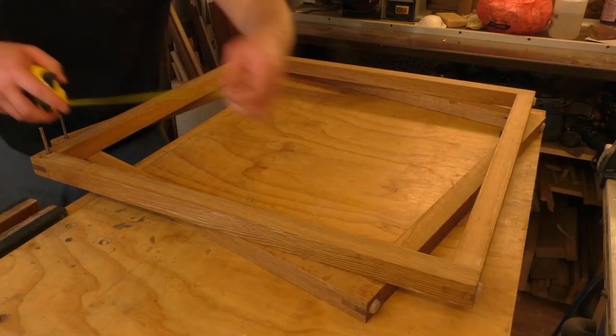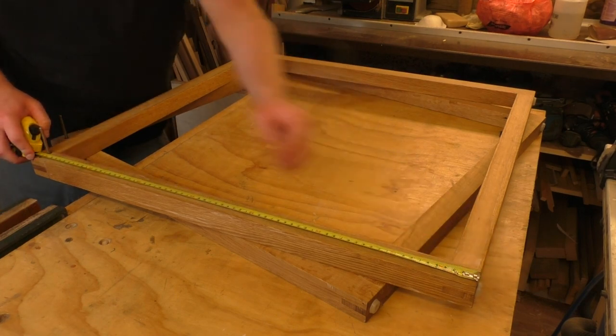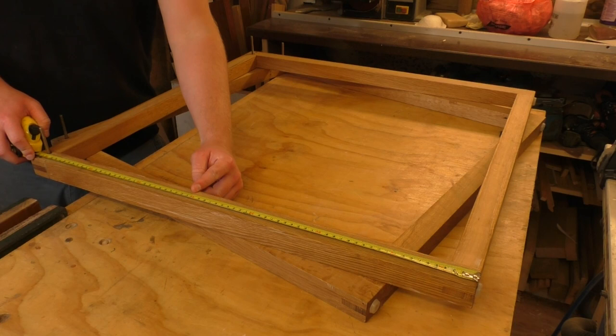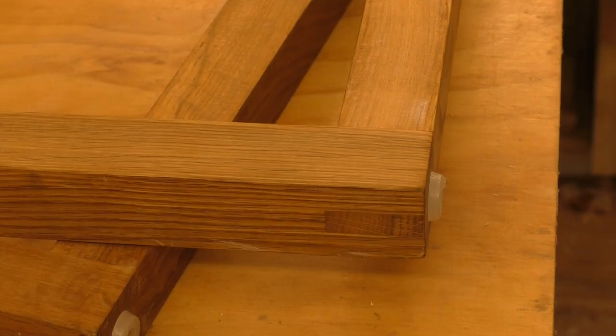So the challenge is to adjust the height of this table from 725 millimeters to 40 centimeters for use as a coffee table, and I want to do that without losing these nice bridle joints which are at the bottom of the table frame.